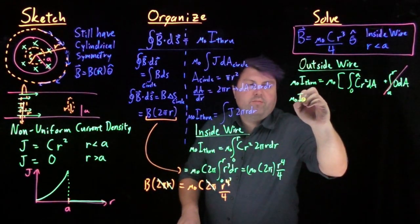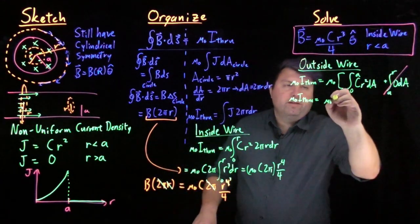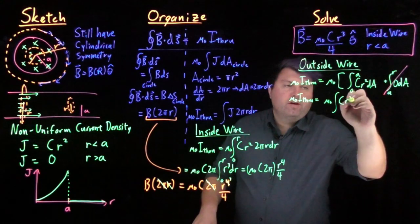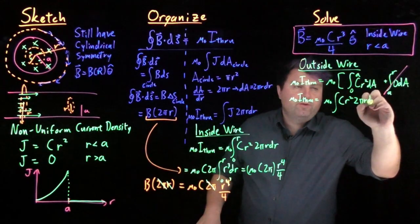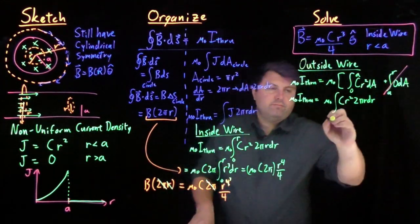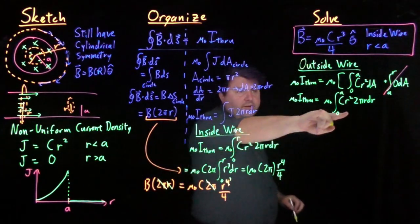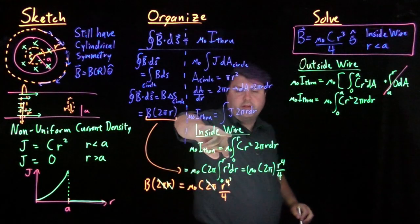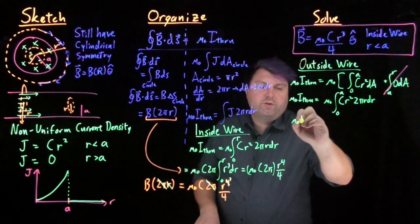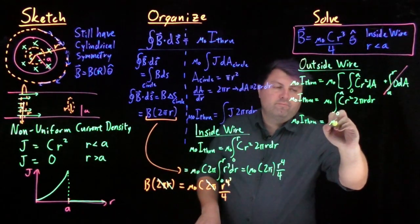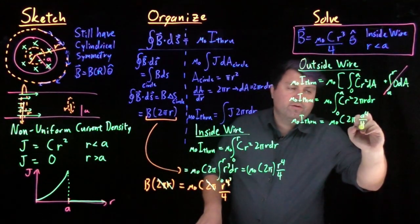And so we have that our mu naught i through is mu naught integral c r squared, and then our dA is the same dA, so 2 pi r dr, 0 to a. This should look very similar. The only difference is the limits. Instead of 0 to r, it's 0 to a.